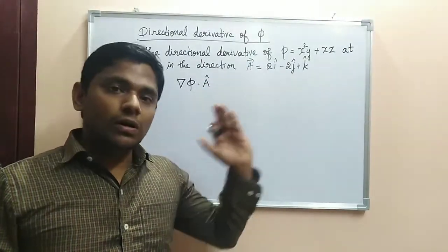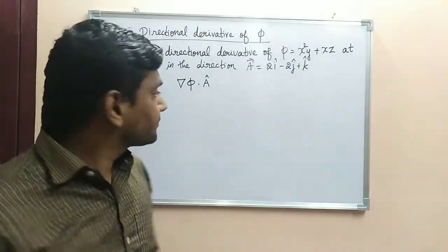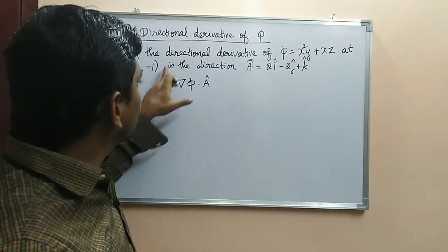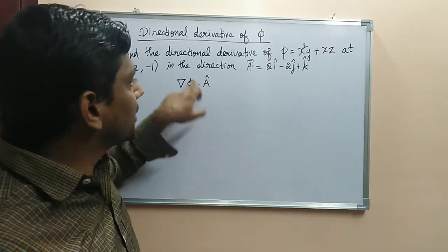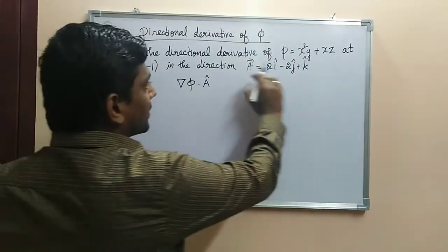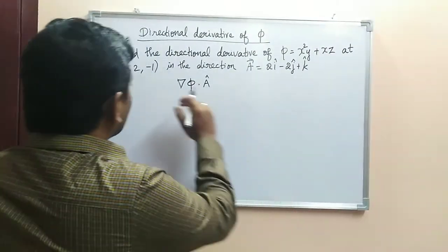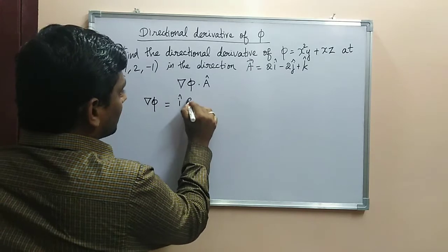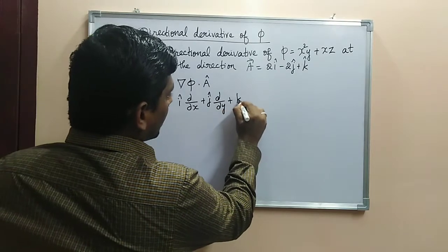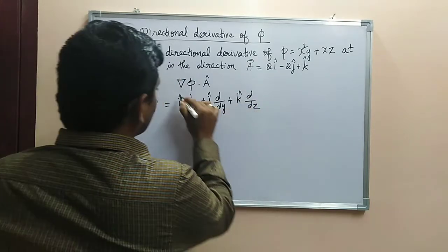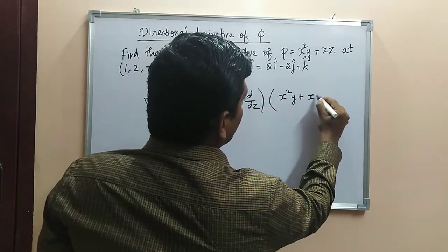Of course, it's a general formula applicable to all kinds of vectors. The general formula is you need to find out the gradient of that scalar and then take the dot product with the unit vector. So here the vector is A = 2i - 2j + k. So we have to find out ∇Φ first. That is i∂/∂x + j∂/∂y + k∂/∂z of that Phi, that is x²y + xe^z.